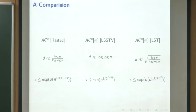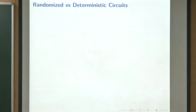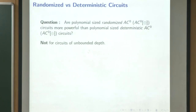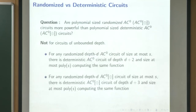I will quickly mention another result and then brush through the proof. The second result asks: are randomized circuits more powerful than deterministic circuits in the AC0 or AC0 parity setting? For constant depth-d circuits, we know that we can increase depth to convert any randomized circuit to a deterministic circuit. In AC0, we have to pay an extra depth of 2, and in AC0 parity, we have to pay an extra depth of 3.